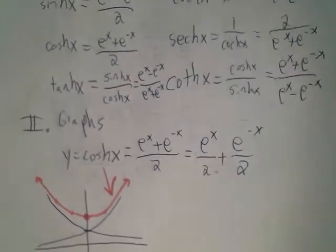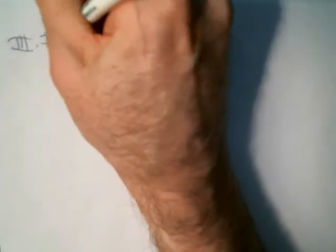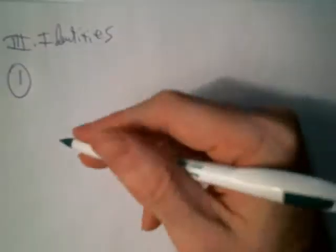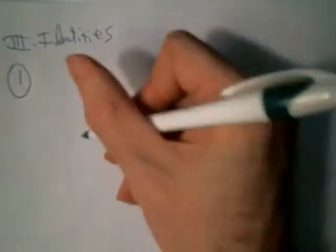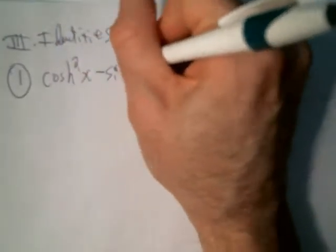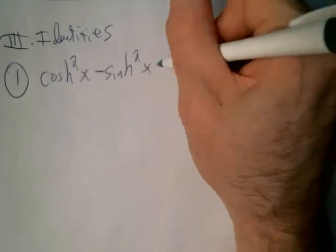There are going to be identities with the hyperbolics, just like there are identities for trig functions. The most fundamental one — analogous to sin²x + cos²x = 1 — is cosh²(x) minus sinh²(x) equals 1.